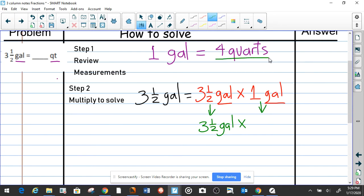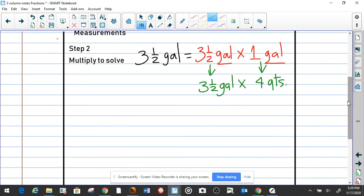We know that because that's what we need to convert them into. So now this is going to be one gallon equals four quarts. That's how you abbreviate it.